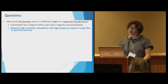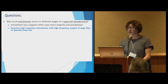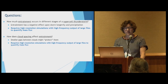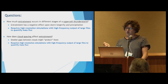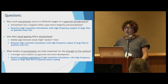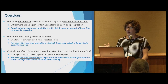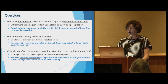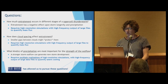I'm looking at three different areas. First, how much entrainment occurs in different stages of a supercell thunderstorm? That requires high-resolution simulations with high-frequency output of large data files to quantify mass flux. Second, how does the spacing between clouds and storms affect entrainment — how much dry air they bring in? Third, what kinds of precipitation are most important for the strength of thunderstorm outflow? That study also requires multiple realizations to understand the generality of results. Blue Waters has allowed us to pursue these questions that heretofore have really not been pursued.